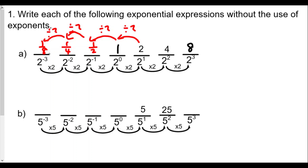For base 5, we begin with 5 to the first power equals 5. Multiply by 5 to get 25, then multiply 25 by 5 to get 125. Moving forward by raising the power by 1, we multiply by 5. Going the other way, we divide by 5: 5 divided by 5 is 1, so 5 to the zero power equals 1.